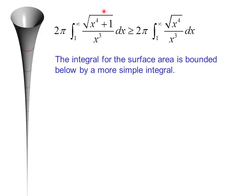We know that the square root of x to the fourth plus 1 is always greater than the square root of x to the fourth. So 2 pi times the integral from 1 to infinity of radical x to the fourth plus 1 over x cubed dx is greater than or equal to 2 pi times the integral from 1 to infinity of 1 over x dx.